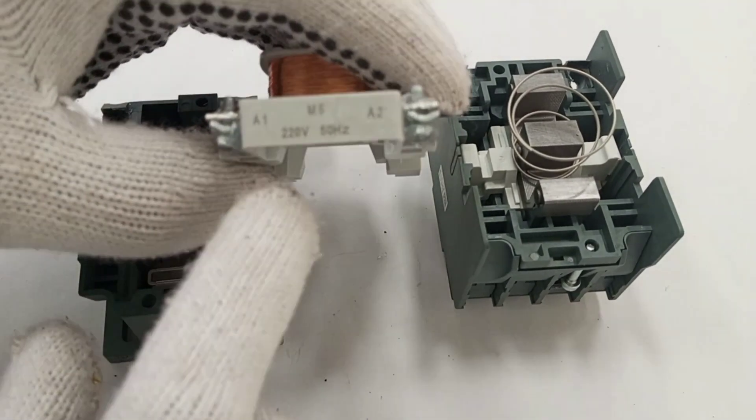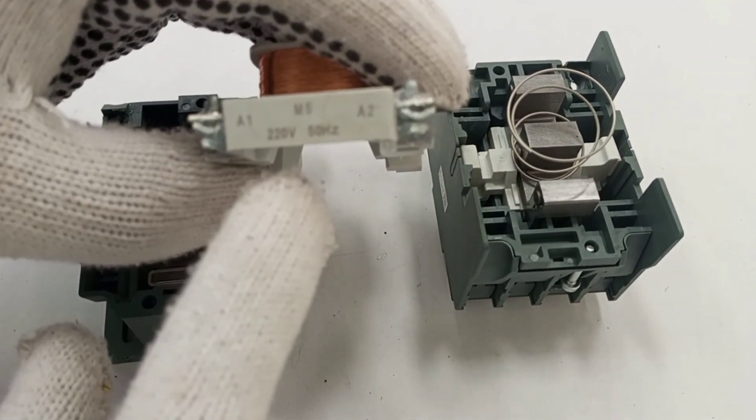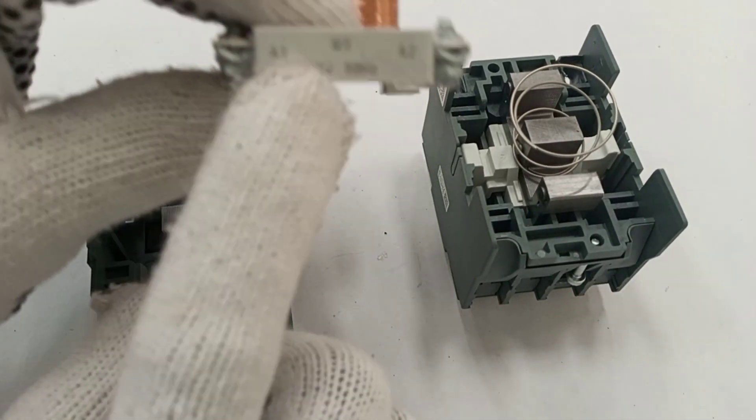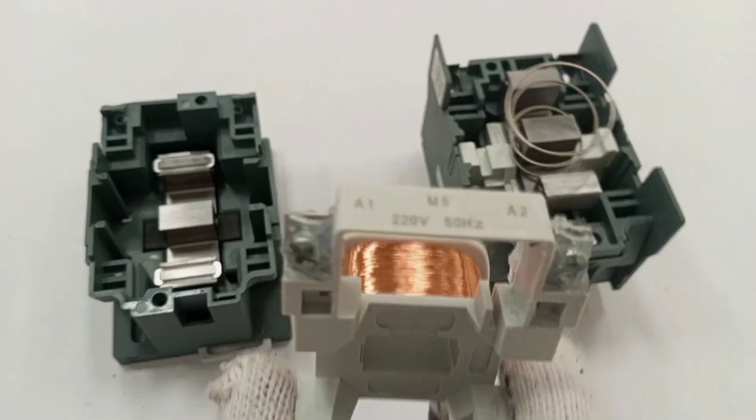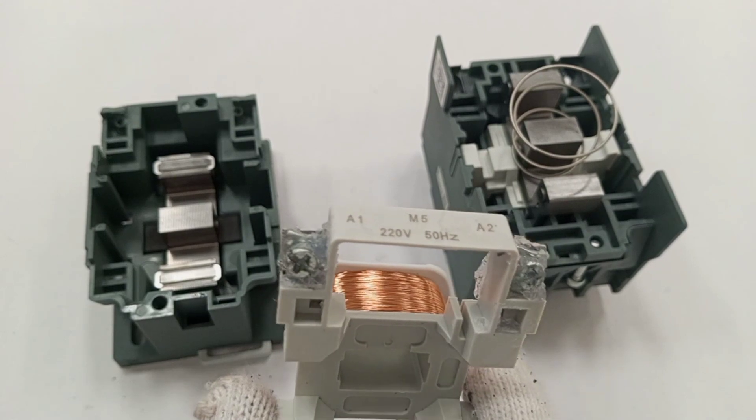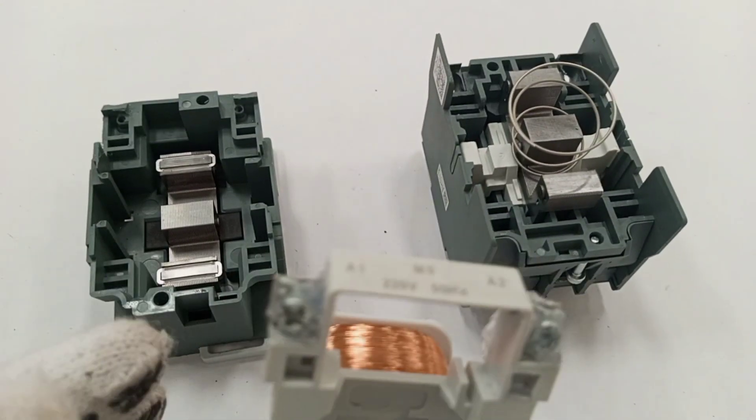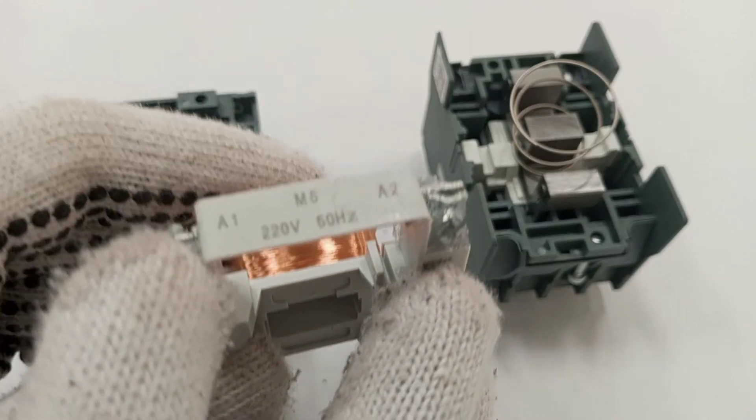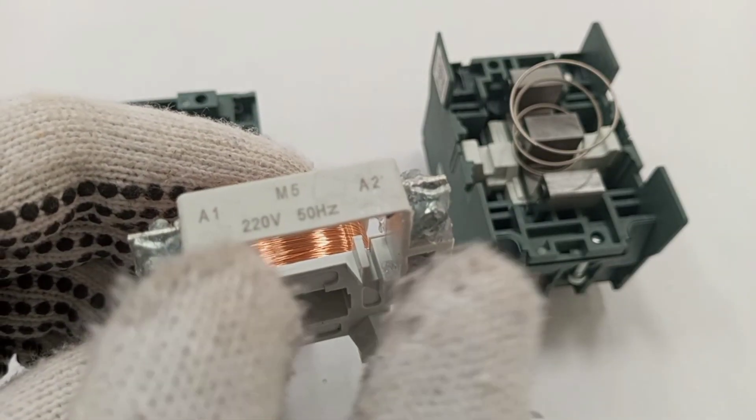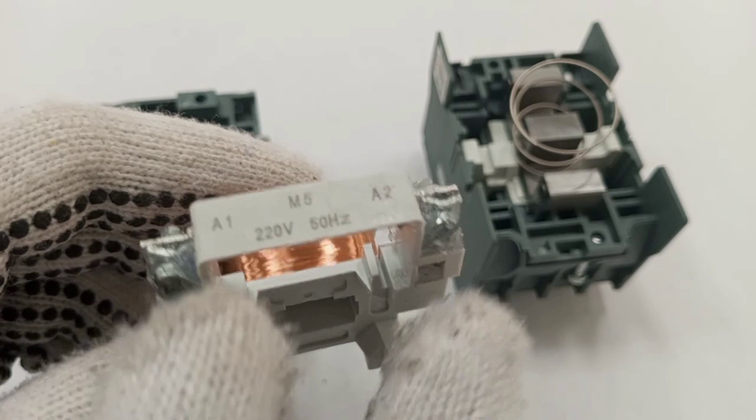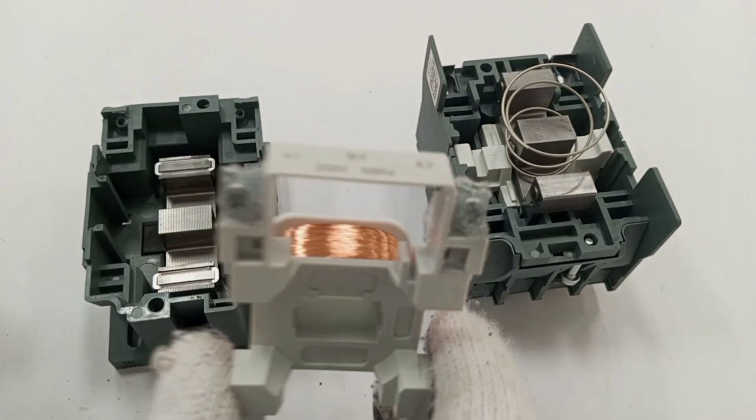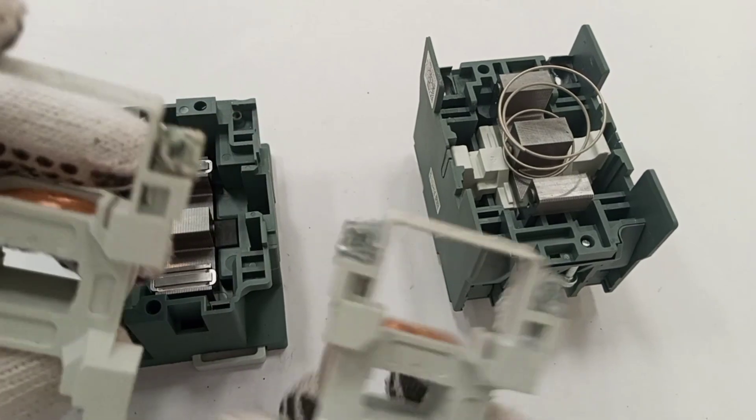We can also replace it because we want a particular voltage rating. So assuming this contactor comes with a 220 volt coil, but where I am installing it I only have three phase available, I can replace this coil with a coil that can be energized by 400 volts. Here I am replacing this one with this one.